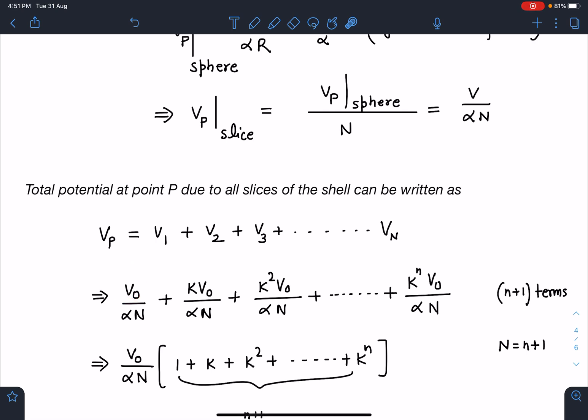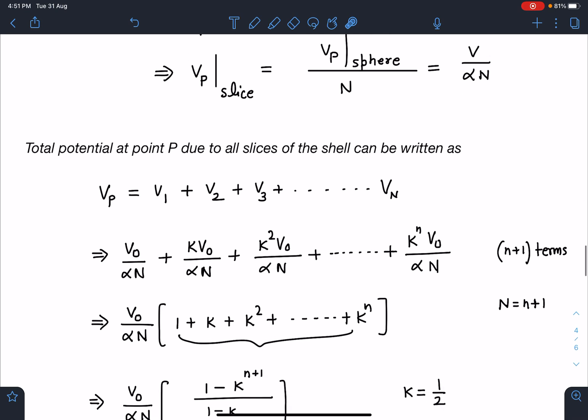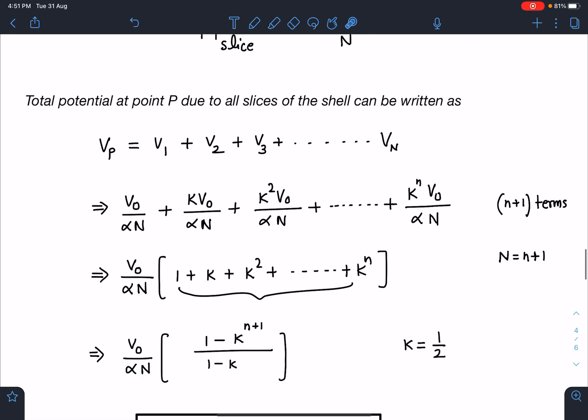Here I can write this capital N is n+1 if I take small n as number. So total number of pieces I can write as n+1 in this case. Here this potential is going to be V₀ by α(n+1) times [1 + k + k² + ... + k to the power n].